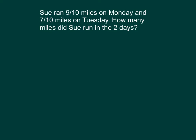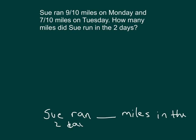Here we have the problem. Let's go ahead and read it. Let's write that finishing sentence. So how many days did she run? Two. She ran not only on Monday, but she also ran on Tuesday. So if the bar represents Monday, and it's 9 tenths, then we have 7 tenths more on Tuesday, which we can represent within our bar model.